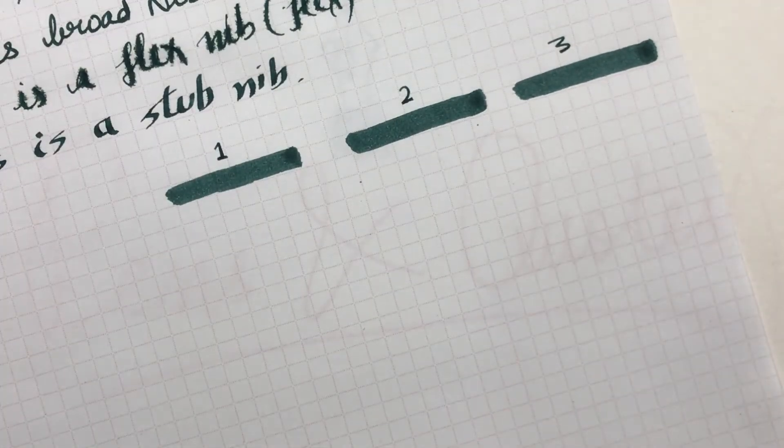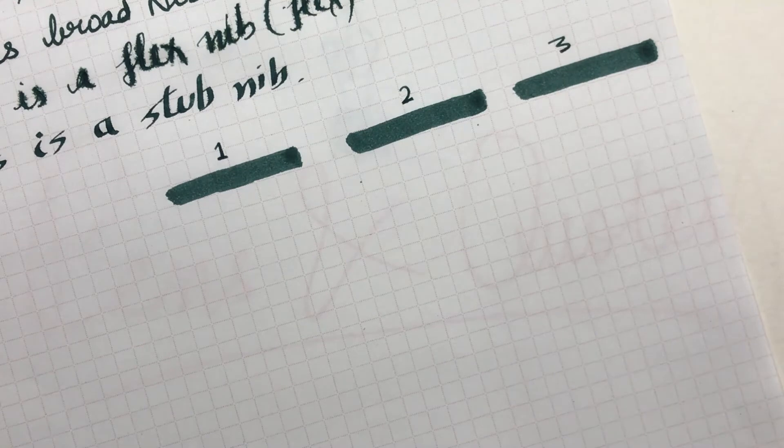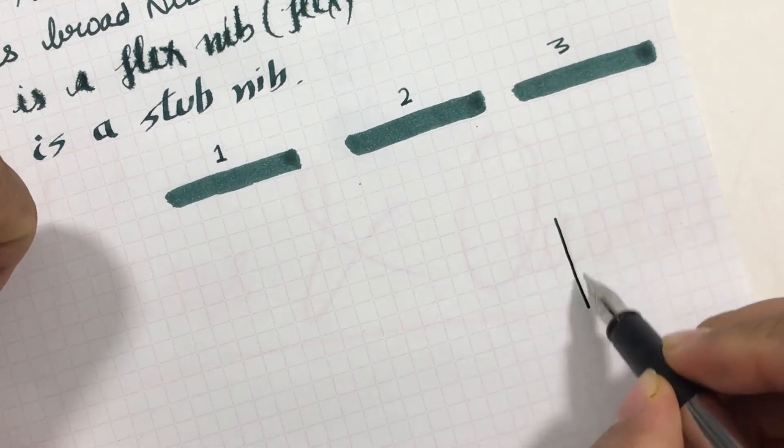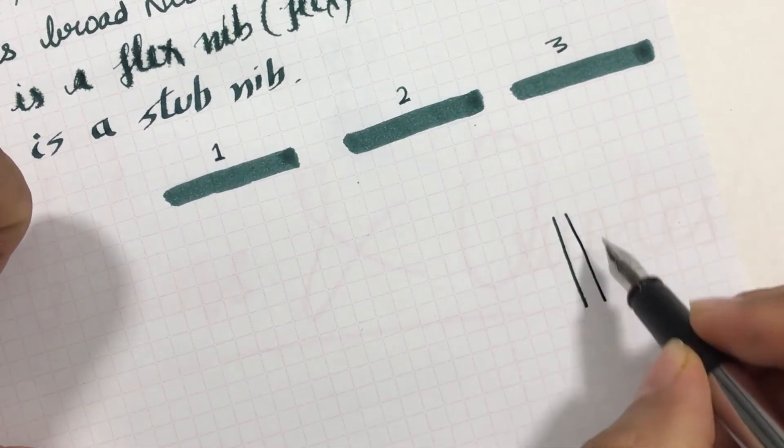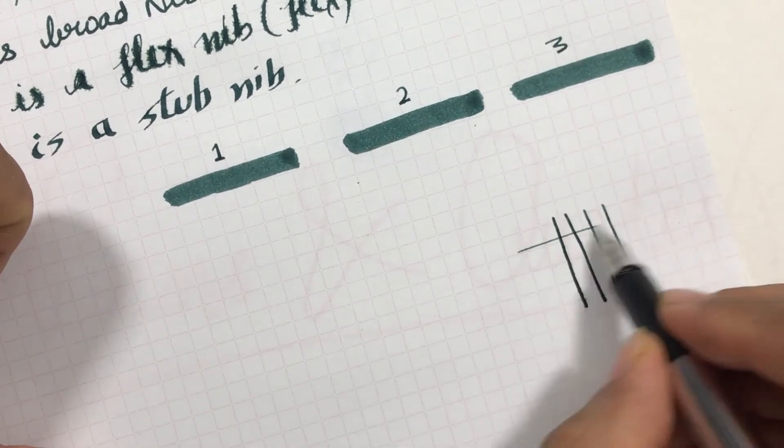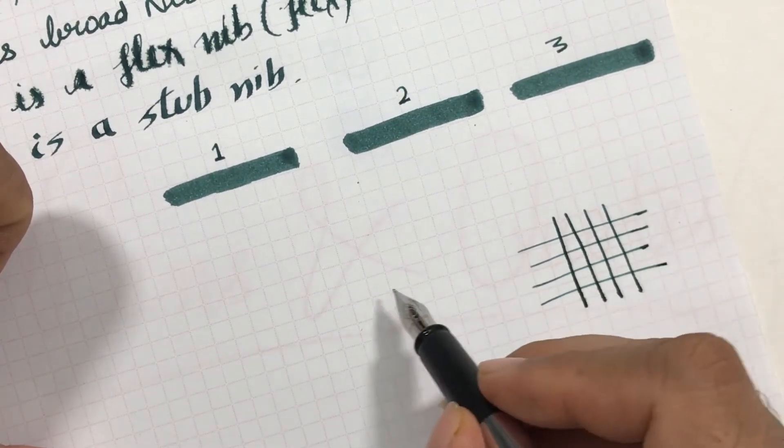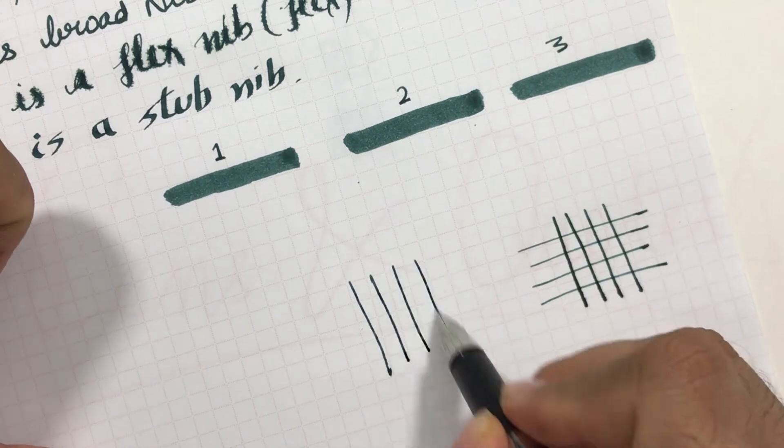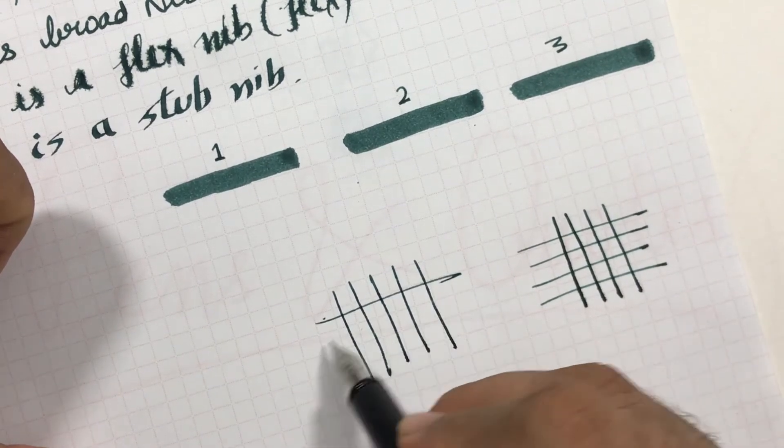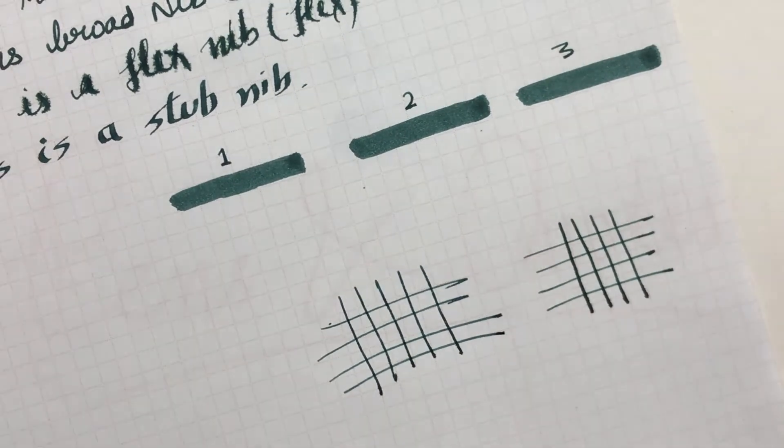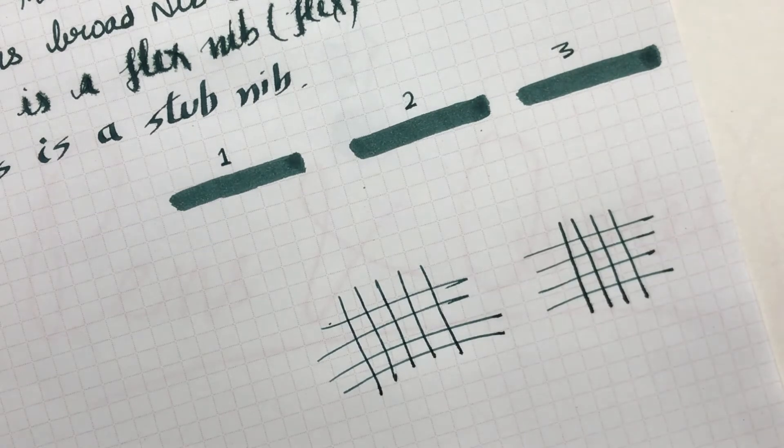So let's do a grid also, and we can do some waterproofing test also. Let me make a grid here. I'll make two grids basically. We can have a swab test and a water drop test also.